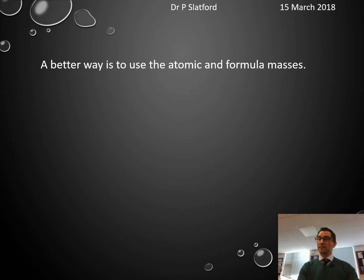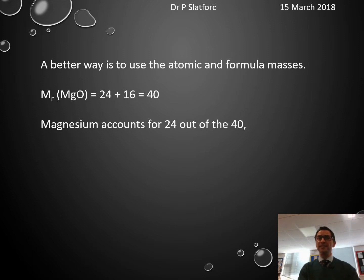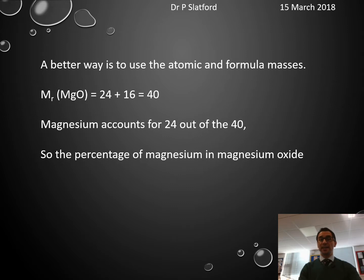A better way is using atomic and formula masses. The relative formula mass of magnesium oxide is 24 plus 16, which equals 40. The magnesium atom accounts for 24 out of that 40, so the percentage of magnesium in MgO by mass is 24 divided by 40 times 100, which equals 60%.